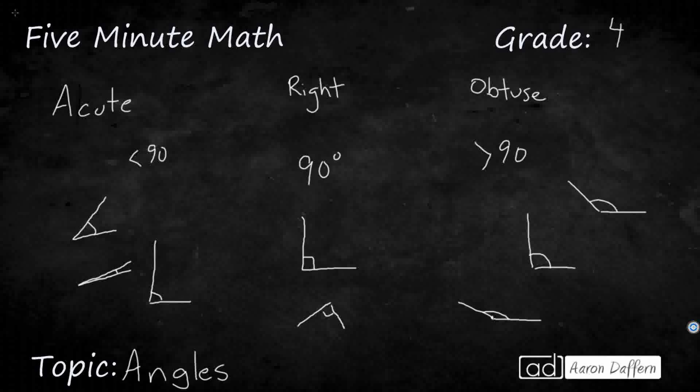So those are all the different types of angles, and most of them are all centered around, are they larger, obtuse than a right angle, or are they smaller, acute than a right angle?